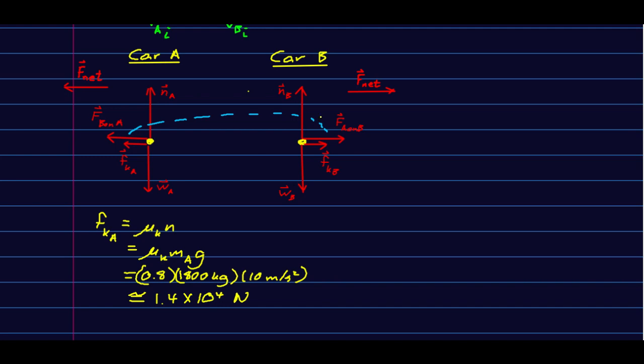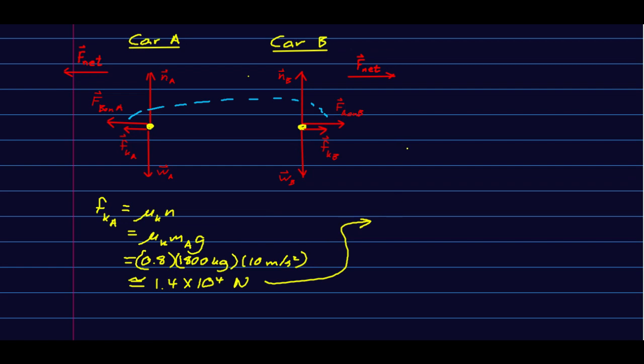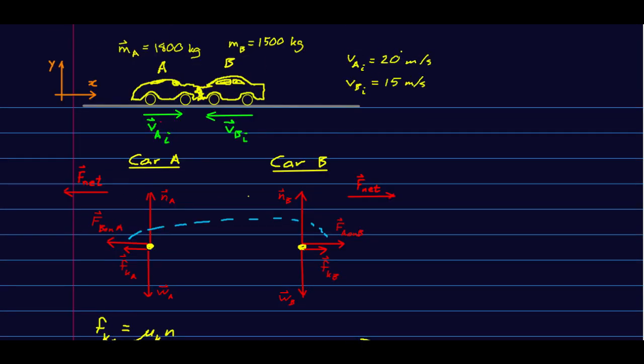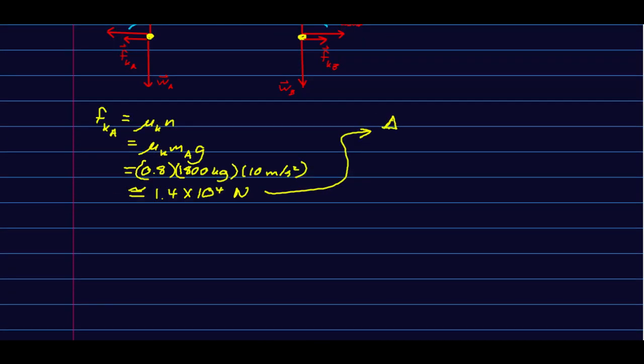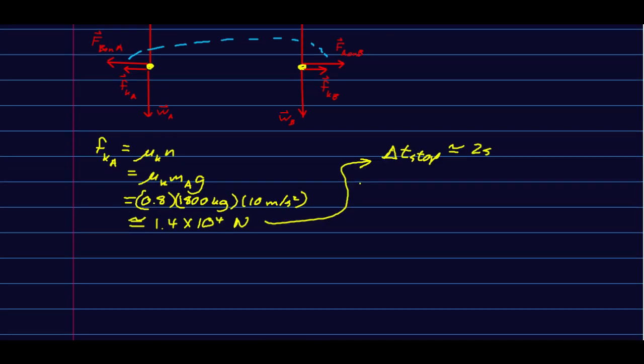But now let's think about these forces that the cars are exerting on each other. Without calculating them, you can reason that they ought to be very big. For example, this friction force - how long would it take for either of these cars to be brought to rest by the friction forces? Around two seconds. These cars are not going very fast. With their tires locked, they'll accelerate at somewhat less than 10 meters per second squared. But during the collision, they're both going to be brought nearly to rest in the blink of an eye.